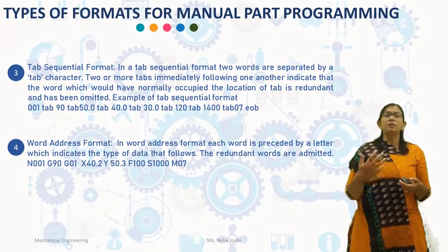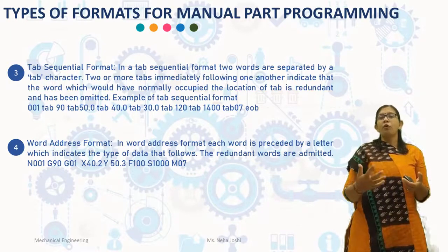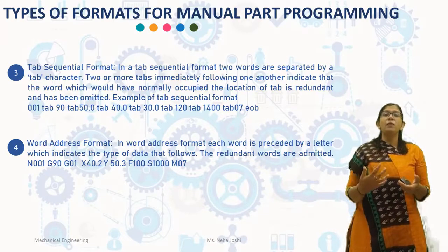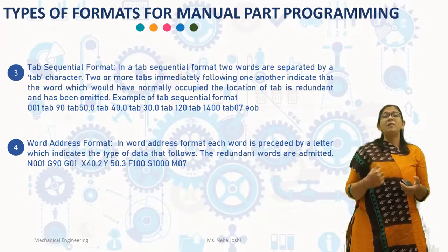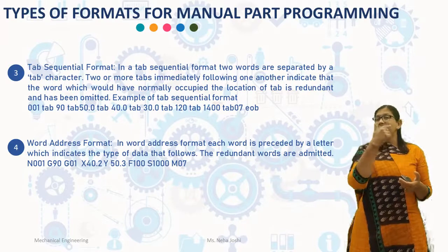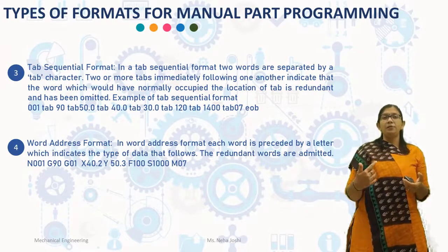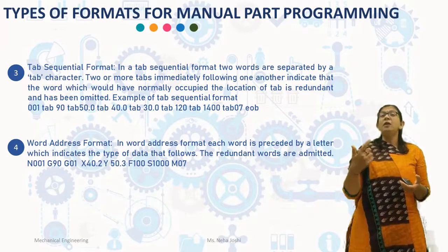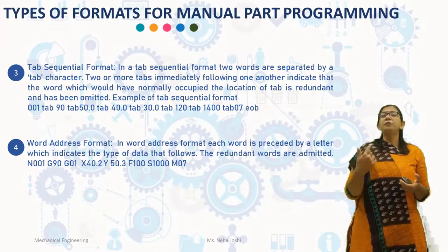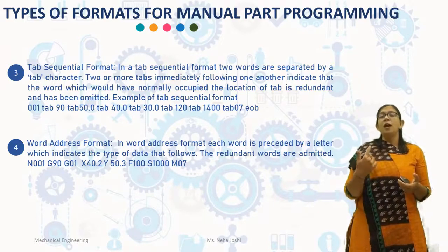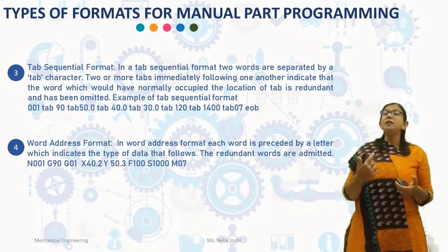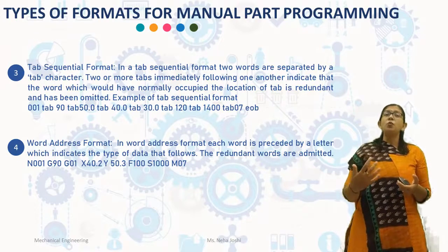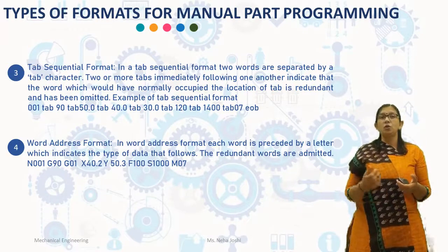The last format is word address format, which is generally used in manual part programming. In word address format, each word is preceded by a letter which indicates the type of data that follows. The redundant words are omitted. For example: N001 is the sequence number, G90 and G01 are preparatory functions, X40.2 and Y50.3 indicate coordinate functions, F100 indicates a feed rate of 100 mm per minute, S1000 indicates spindle speed of 1000 RPM, and M07 indicates the miscellaneous function. This covers part programming and manual part programming used in CNC and NC machine tools.